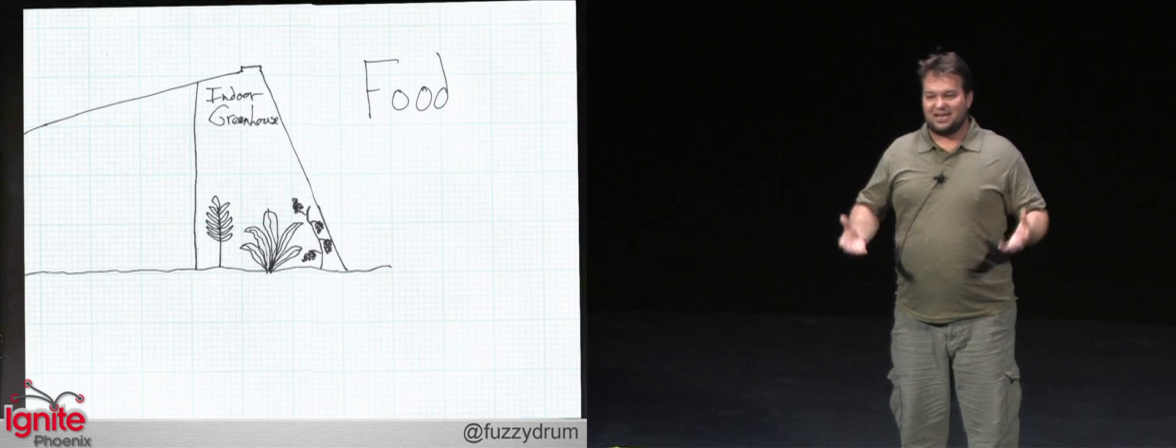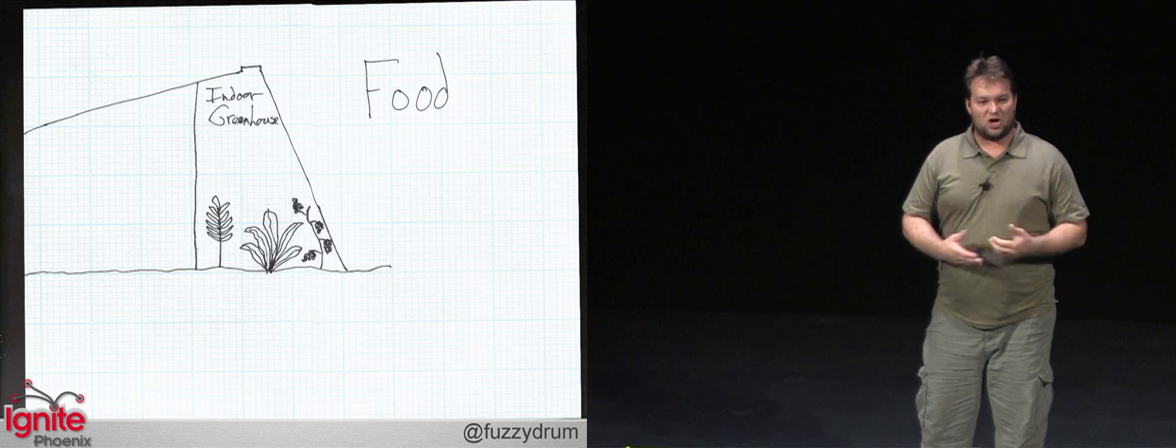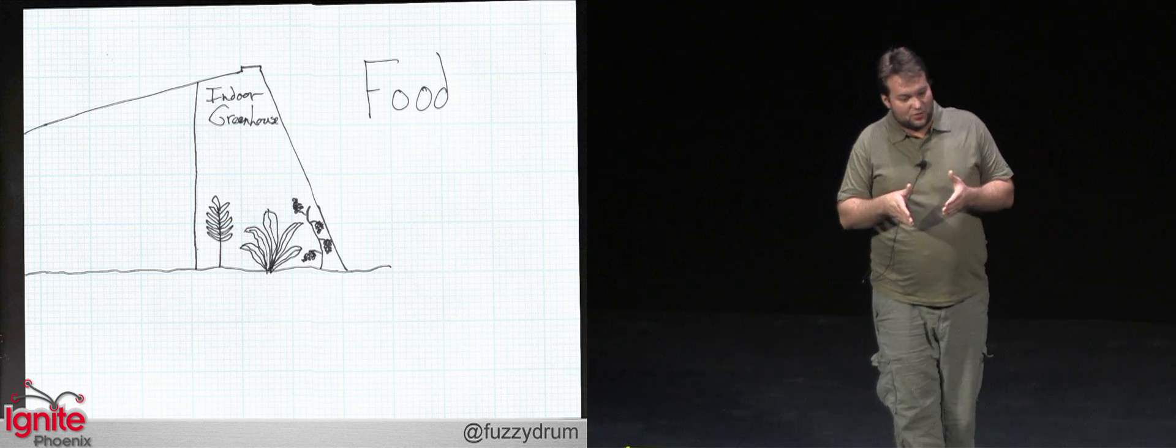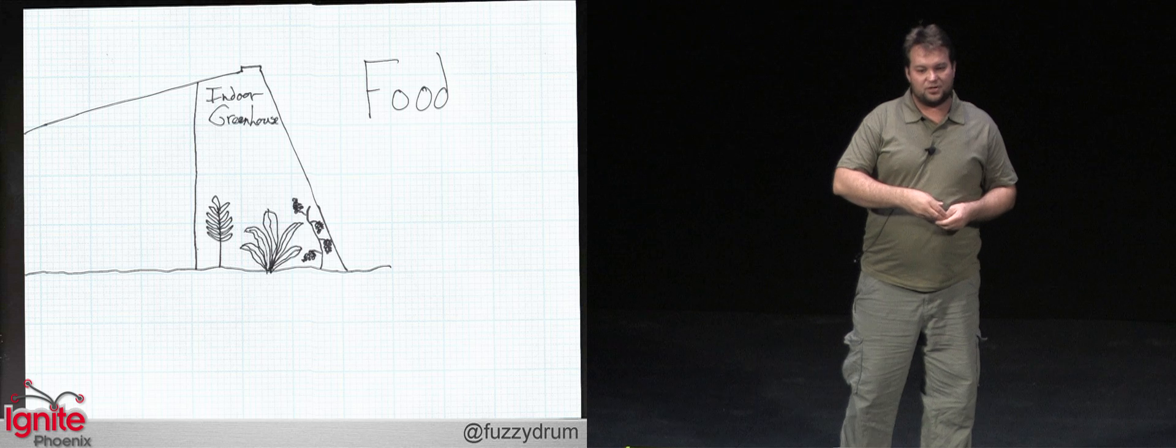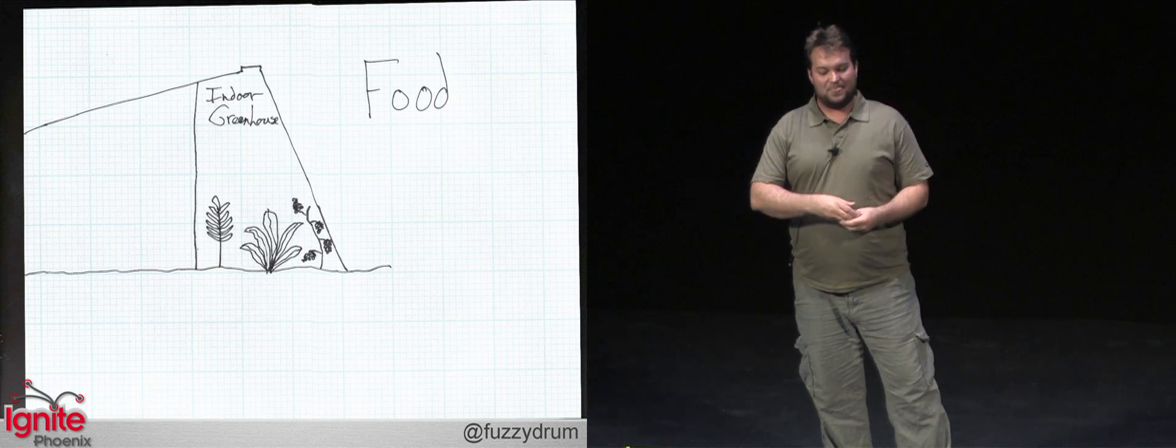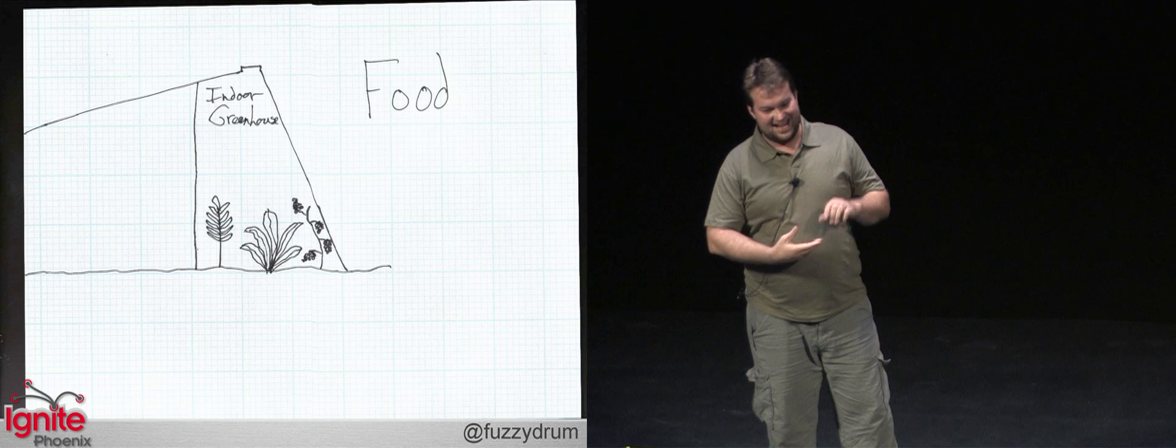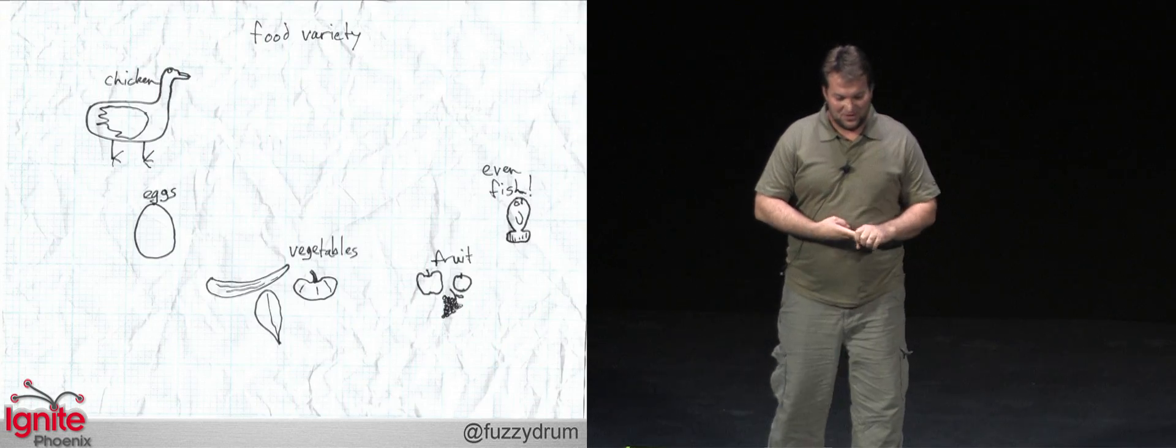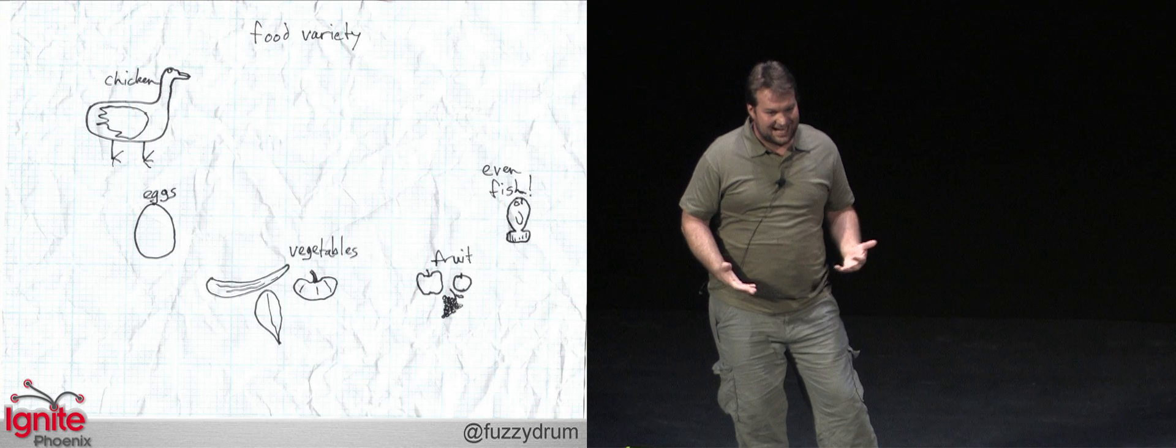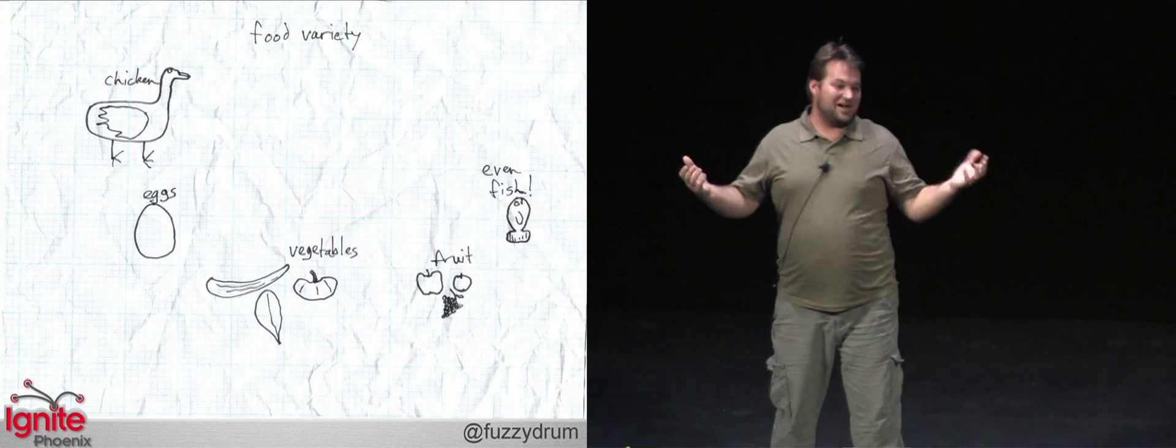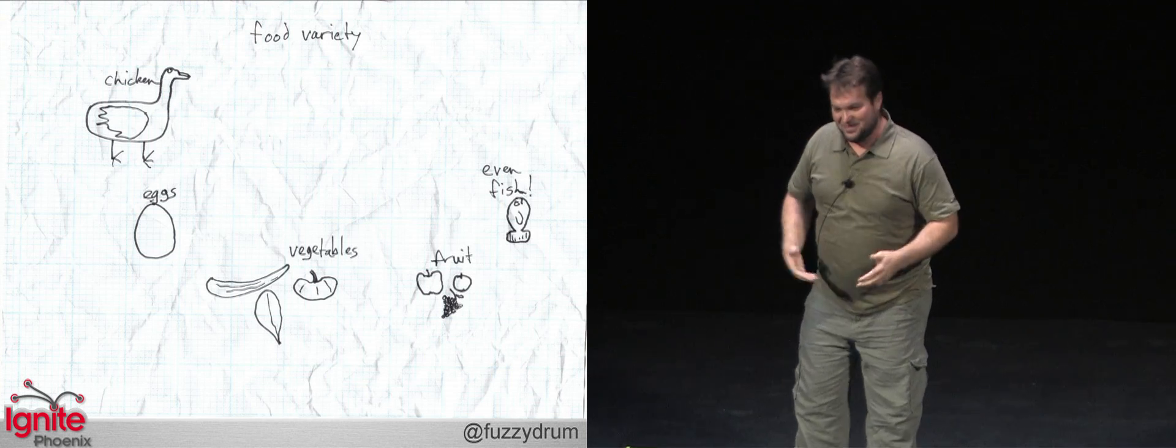And then finally, you're going to need to eat. So in the desert, it's hard to grow food, but we're going to have some indoor greenhouses where we're climate controlled, we're using that water again to produce that food, and we're going to be able to create things like chicken, eggs, fruit, vegetables, even fish. You don't have to be a vegan to live in the desert. It's going to be awesome.